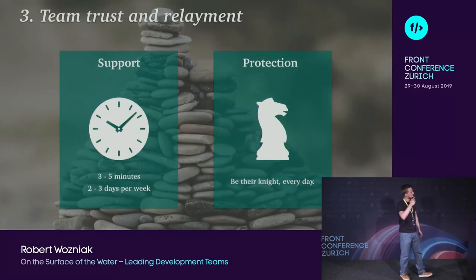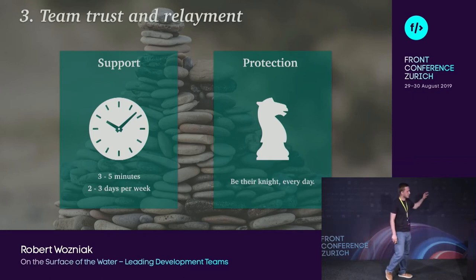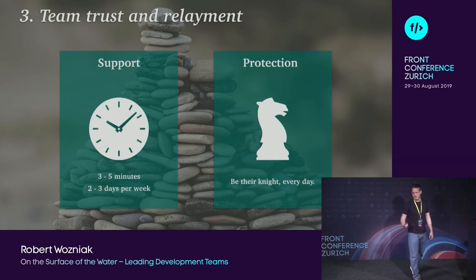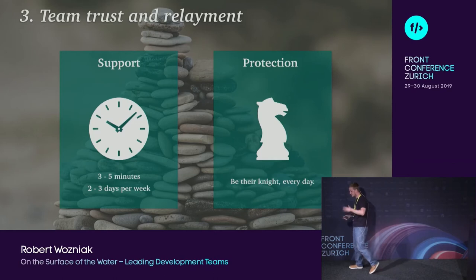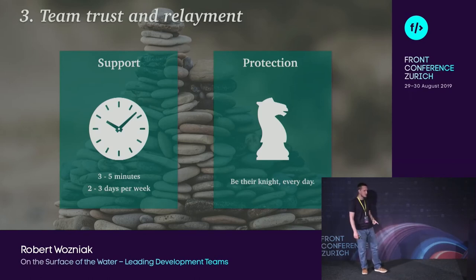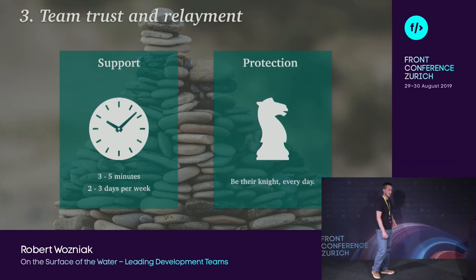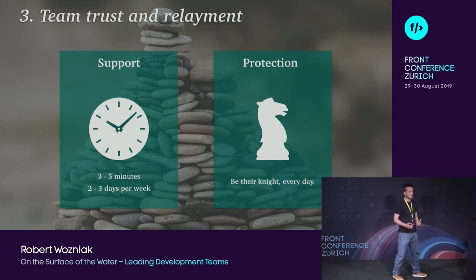That takes us to team trust and alignment, which consists of two methods. The first is support and protection. Support means spending two to three minutes, two to three days per week with each team member — that applies to leads managing five to ten developers. For larger teams of twenty or more, try once a week or once every two weeks, or use Slack to check in: how are they doing, what are they working on, how are they feeling, do they need help, how can you help them improve.